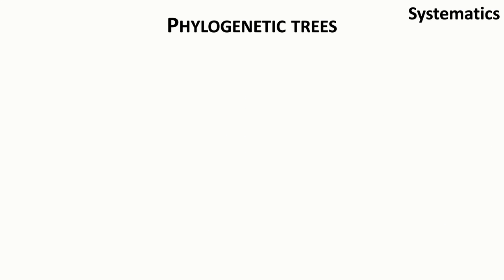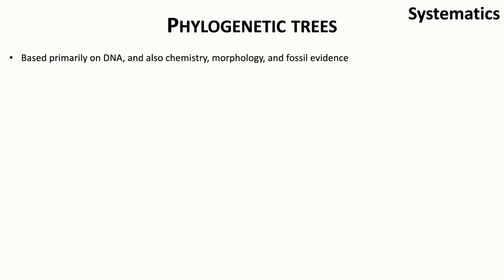Now we'll move on to our next topic: plant systematics, or how Western science groups and classifies plants according to evolutionary relationships. The first thing to know is that this classification system draws primarily from data about DNA, or plants' genetic material, to infer how plant lineages evolved over time to result in all of the diversity we see today. Other supporting forms of data include chemistry, morphology related to plant structures, and fossil evidence.